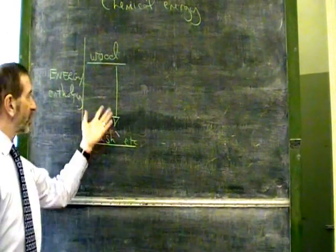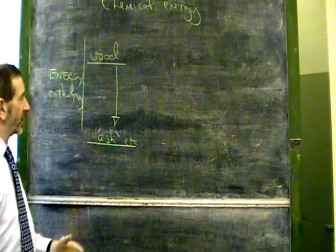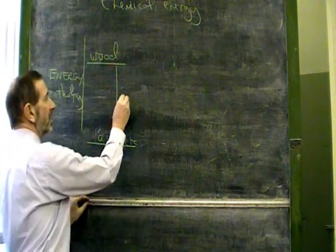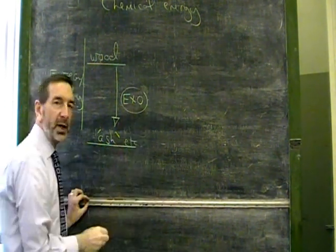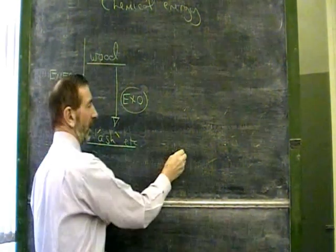Then the products of this reaction have less energy than the reactants. This is an exothermic reaction. The alternative, of course, is an endothermic reaction.